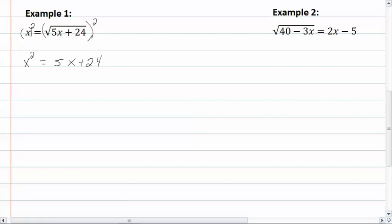We want to get everything on one side because we have a quadratic. So now we have x² - 5x - 24 = 0.